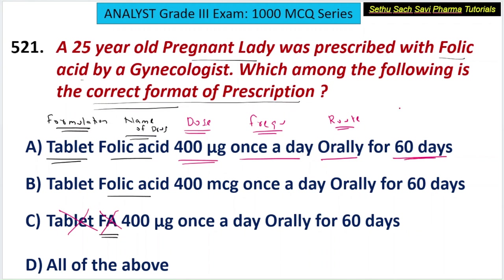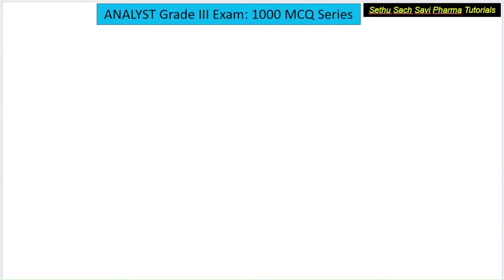The route and the duration for which you need to take the drug should be there. So: formulation, full name of the drug, dose, frequency, route, duration — all these things should come in a prescription. Now the difference between choice A and B is in the dose. One gives 400 μg and the other gives 400 mcg. Whenever a drug is prescribed in microgram, the correct way to represent it is MCG, not the symbol μ.